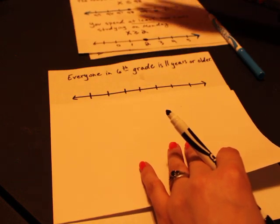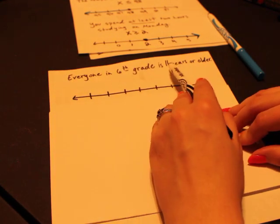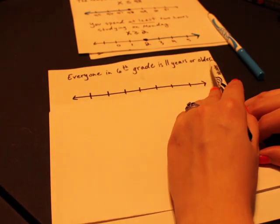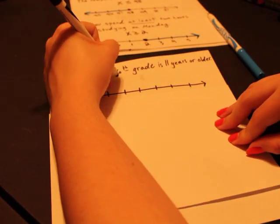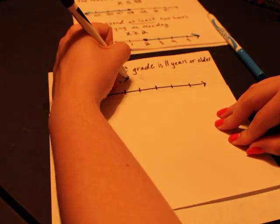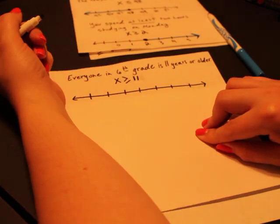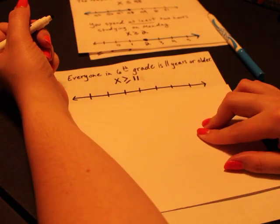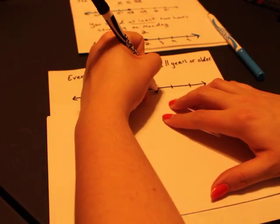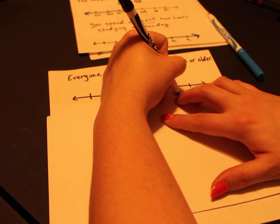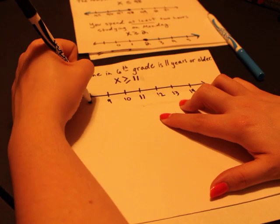Now we've got our fourth example here. Everyone in sixth grade is 11 years or older. So that means they're 11, 11 and a half, 12. X is greater than or equal to because they could be equal to 11. So x is greater than or equal to 11. And we'll fill in here. Here's 11, and we've got 12, 13, 14, 10, 9, 8.